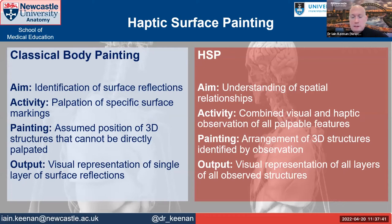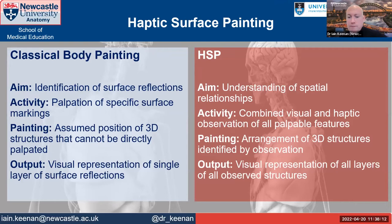I just want to emphasize that there is a difference between classical body painting and HSP. In classical body painting, the intention is to identify surface reflections — providing clinical relevance in terms of identifying surface landmarks and what the underlying structures appear as on the surface. It does involve palpation to identify those surface landmarks, but when you're actually painting the surface reflection, you have to visualize what the 3D structure looks like underneath. By performing that body painting, you don't actually get to palpate the 3D arrangement of the underlying structures — that's got to come from prior knowledge or from having a model or specimen with you.